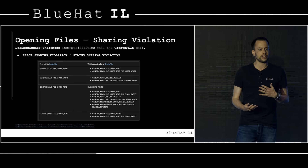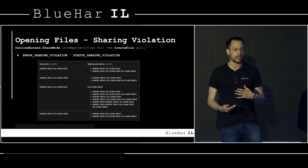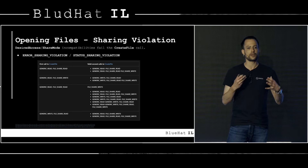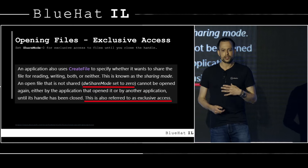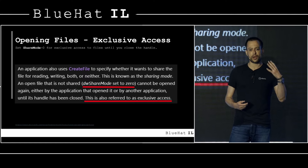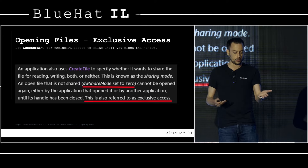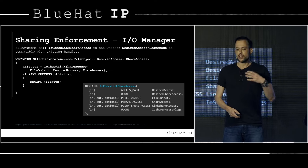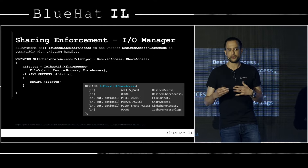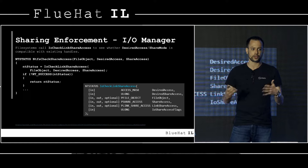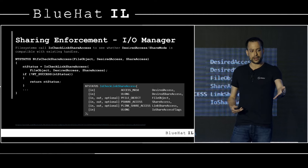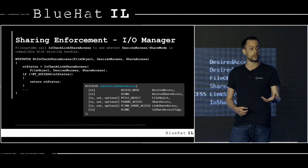If either test fails, you get a sharing violation and your attempt to open the file fails. There's also exclusive access: if you open a file with a share mode of zero, nobody else can open the file according to documentation. Sharing is enforced by the file system. One of the first things it does is call into the I/O manager using IoCheckLinkShareAccess, which performs the desired access vs. share mode test I just described.